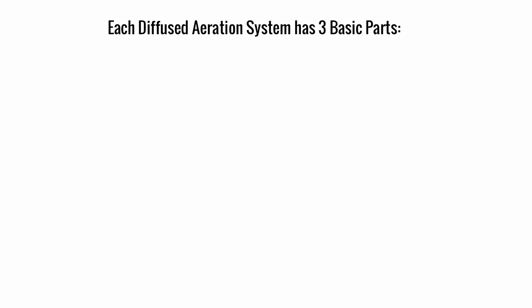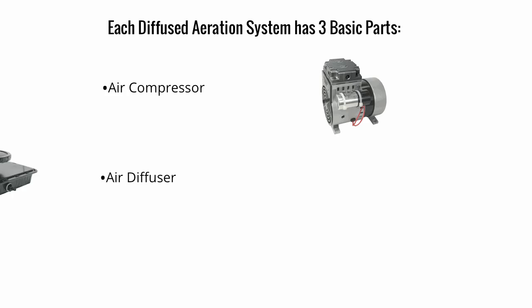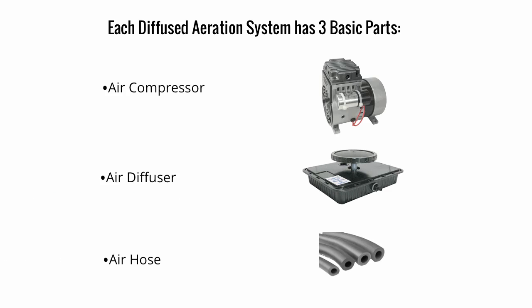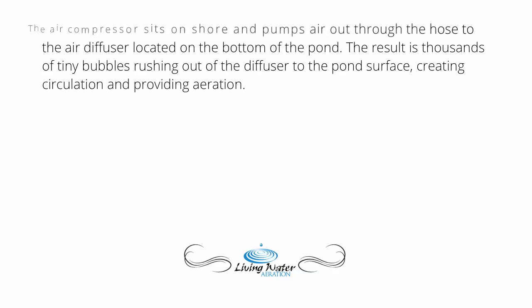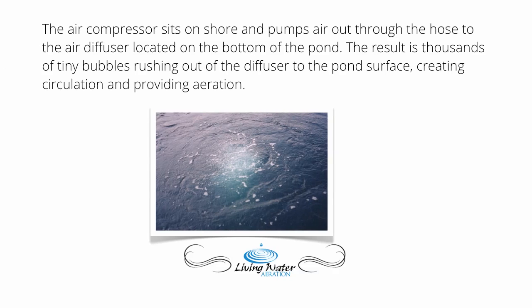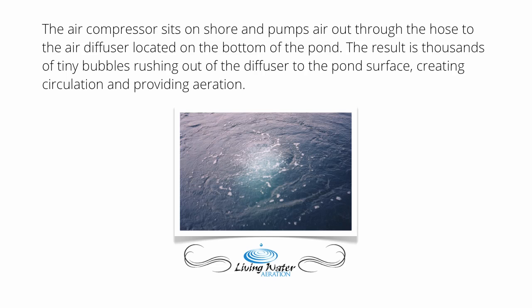Each diffused aeration system has three basic parts: air compressor, air diffuser, and air hose. The air compressor sits on the shore and pumps air out through the hose to the air diffuser located on the bottom of the pond. The result is thousands of tiny bubbles rushing out of the diffuser to the pond surface, creating circulation and providing aeration.